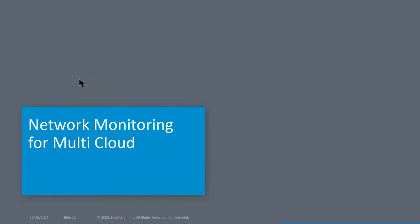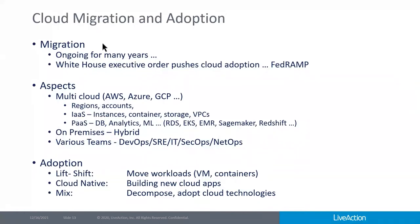On network monitoring for multi-cloud: cloud migration and adoption has been ongoing for many years, and the White House executive order pushes cloud adoption with FedRAMP implications. There are many aspects to cloud migration, including multi-cloud — AWS, Azure, GCP. We see customers using one primary cloud provider like AWS and a secondary for specific things like analytics on GCP. It gets complex even with a single provider: multiple regions, and hundreds of accounts — some DOD contractors use hundreds of accounts just to reduce blast radius if one is compromised.